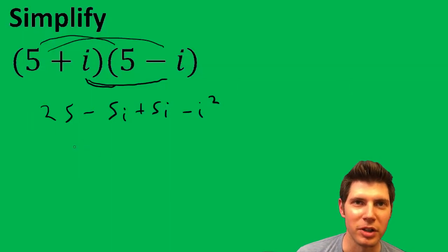Combine like terms, we get 25, these cancel, minus i squared.